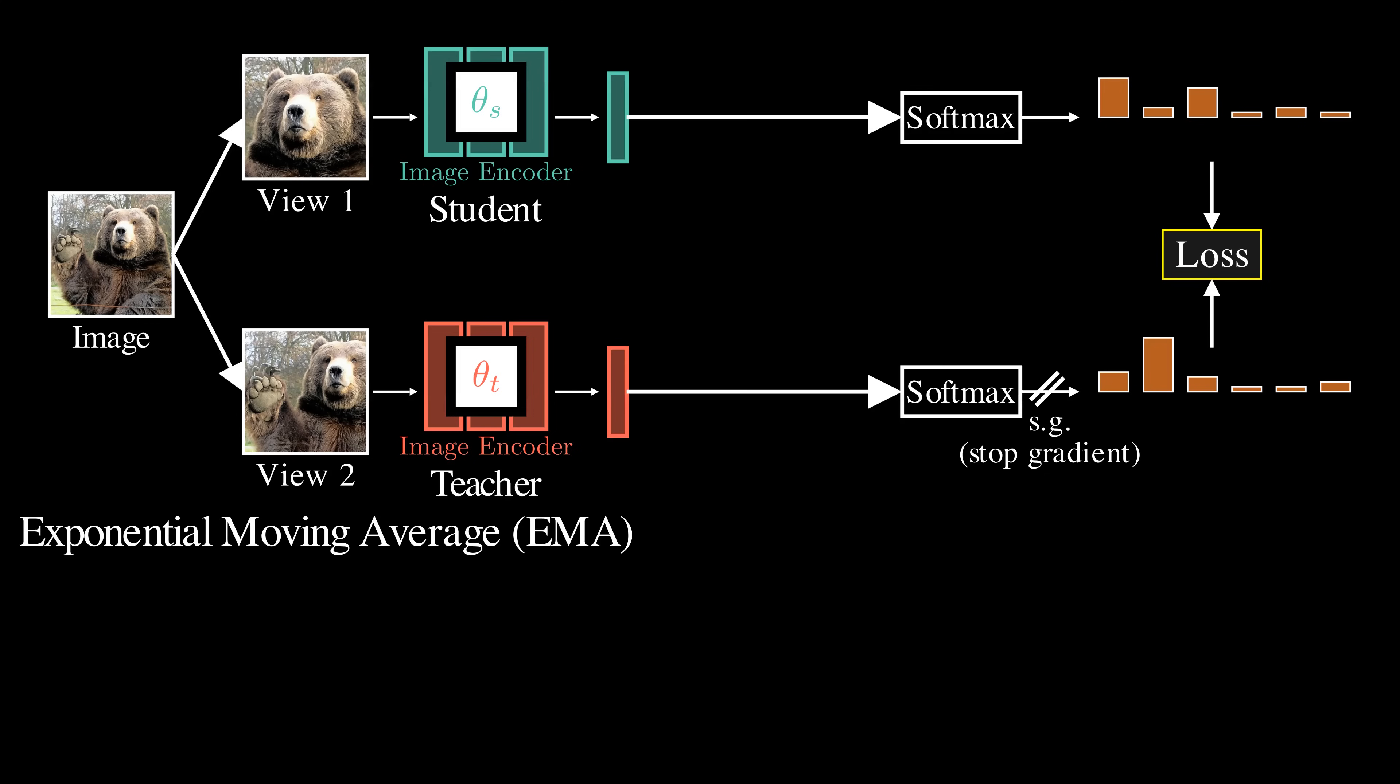Specifically, after each training step, we update the teacher's parameters using the following formula. The value lambda controls the update rate for the teacher model. A larger value means slower update. In practice, we set the initial value of lambda as 0.996 and gradually increase it over the course of training.